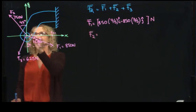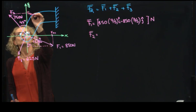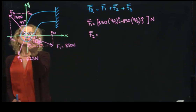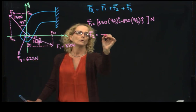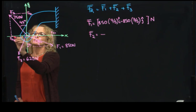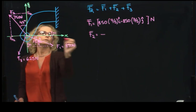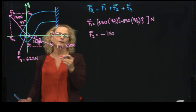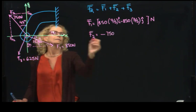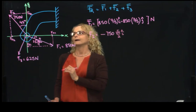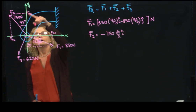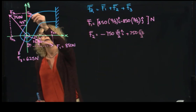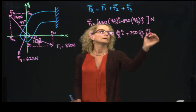F2 will also be described by Fy2 and Fx2. The x component is on the negative side of the x-axis, so it's a negative value. The magnitude of the force times sine of 45 — since sine is opposite over hypotenuse — gives sine of 45, which is square root of 2 over 2 in the i direction. And y is in the positive axis, so it will be plus 750 times square root of 2 over 2, which is cosine of 45, in j. This is in Newtons.